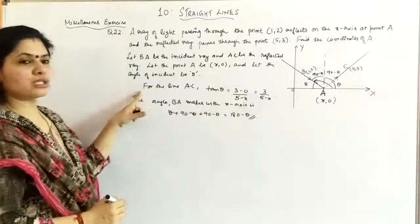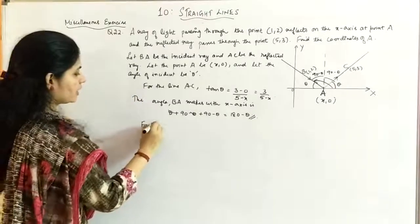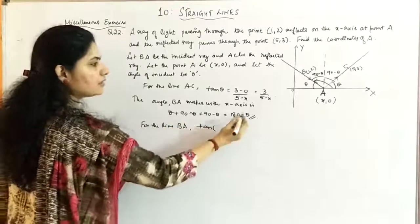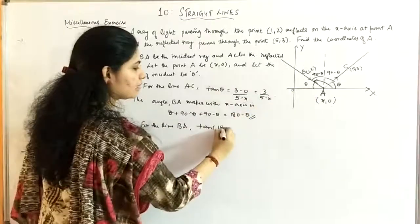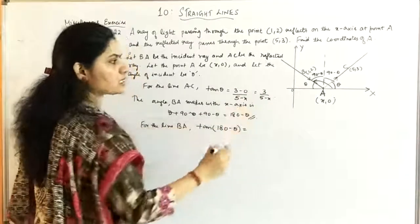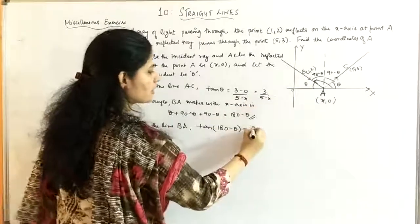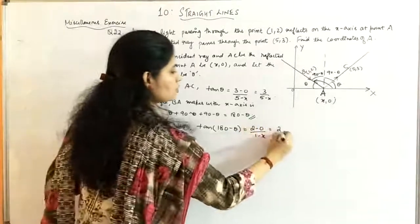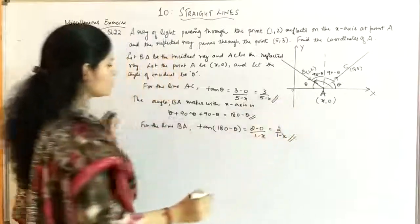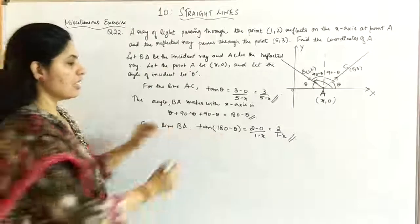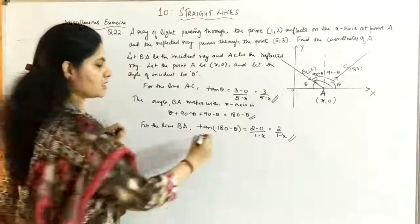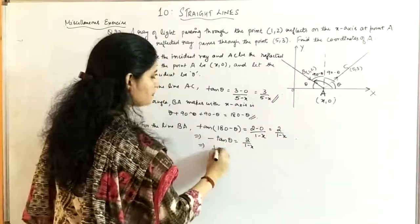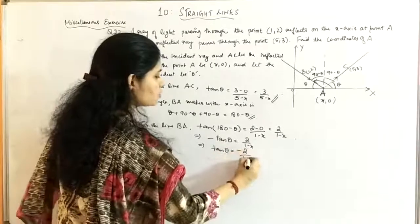Both expressions equal tan θ, so we equate the right-hand sides. From equations 1 and 2: 3/(5 - x) = -2/(1 - x), giving 3(1 - x) = -2(5 - x), so 3 - 3x = -10 + 2x. This gives 5x = 13, so x = 13/5.